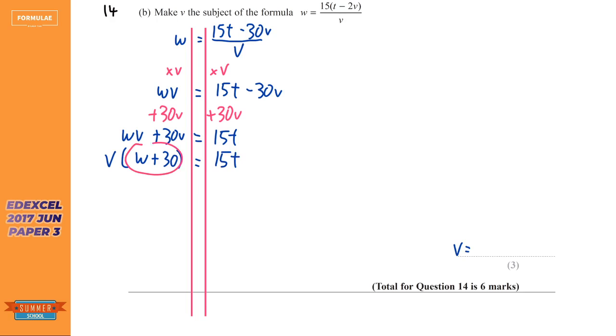And so all we need to do is get rid of this bracket here. And we do that just by dividing both sides by that bracket. So we're left with a V on the left hand side. And we've got that 15T and we're dividing by W plus 30. Now divide just means over. So it's going to be over W plus 30. So it's V equals 15T over W plus 30.